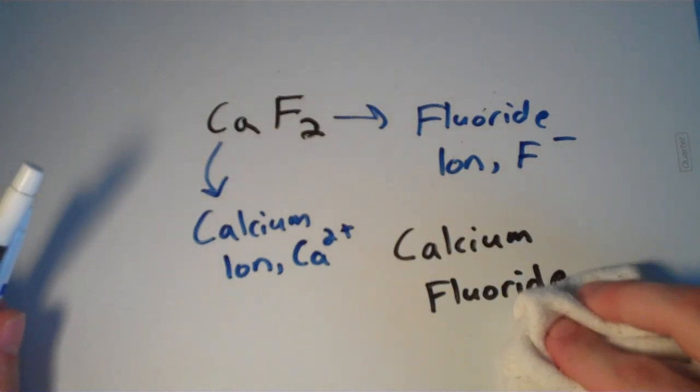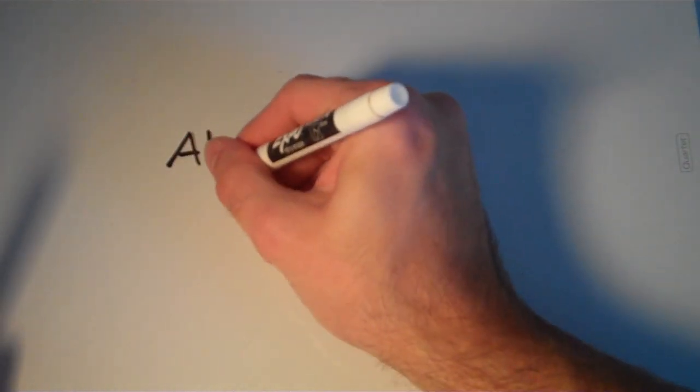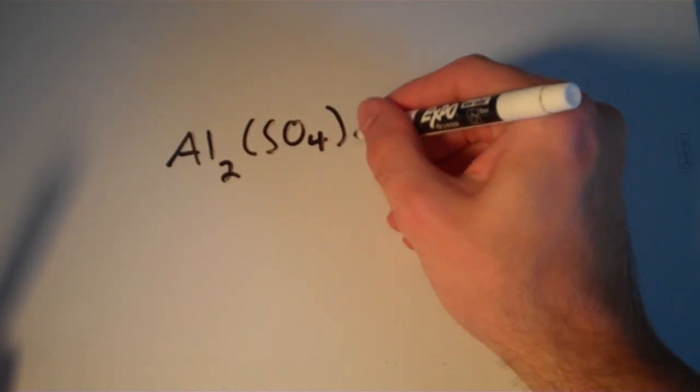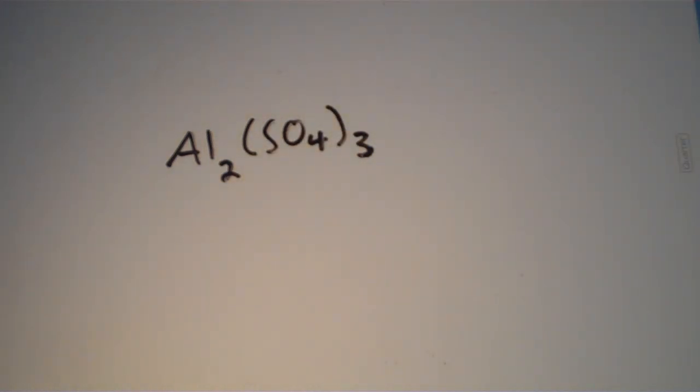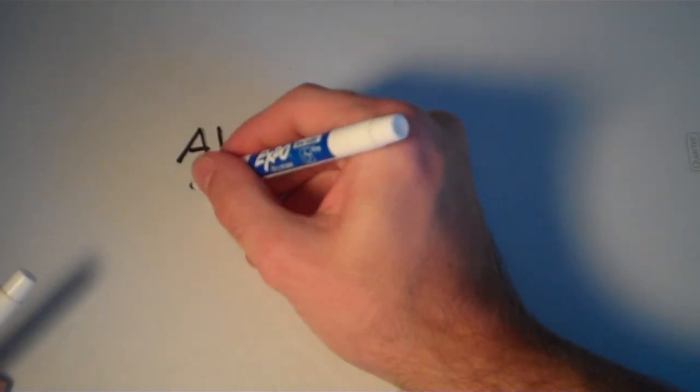Pretty easy. Let's go on to one that might be a little bit harder. Let's see. Al2(SO4)3. What is the name of this?